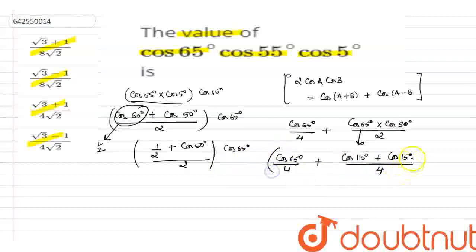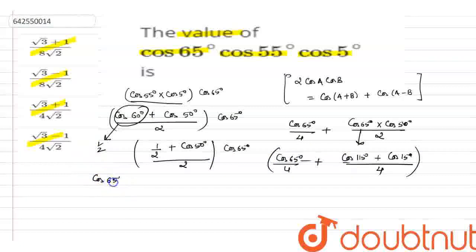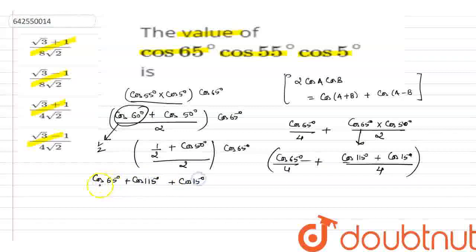Now we can apply the formula to the remaining terms. This gives us cos(65°)/4 + cos(115°)/4 + cos(15°)/4, all divided together.